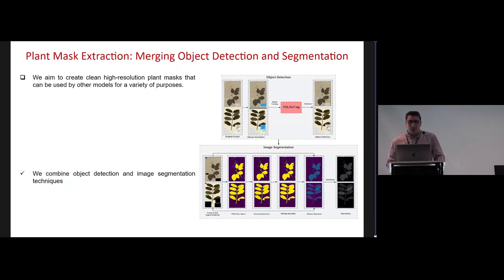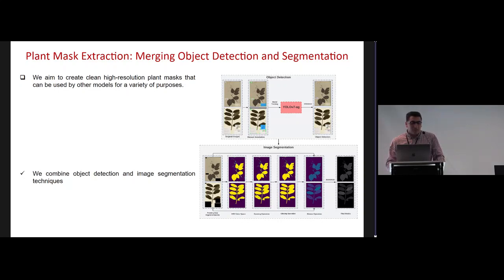For the object detection, we used YOLO v7, an algorithm for object detection, but we improved it by adding an attention mechanism called an attention gate. At the end, we propose an algorithm that identifies and retains the pixels belonging to the plant specimen and removes the other pixels that belong to non-plant elements.